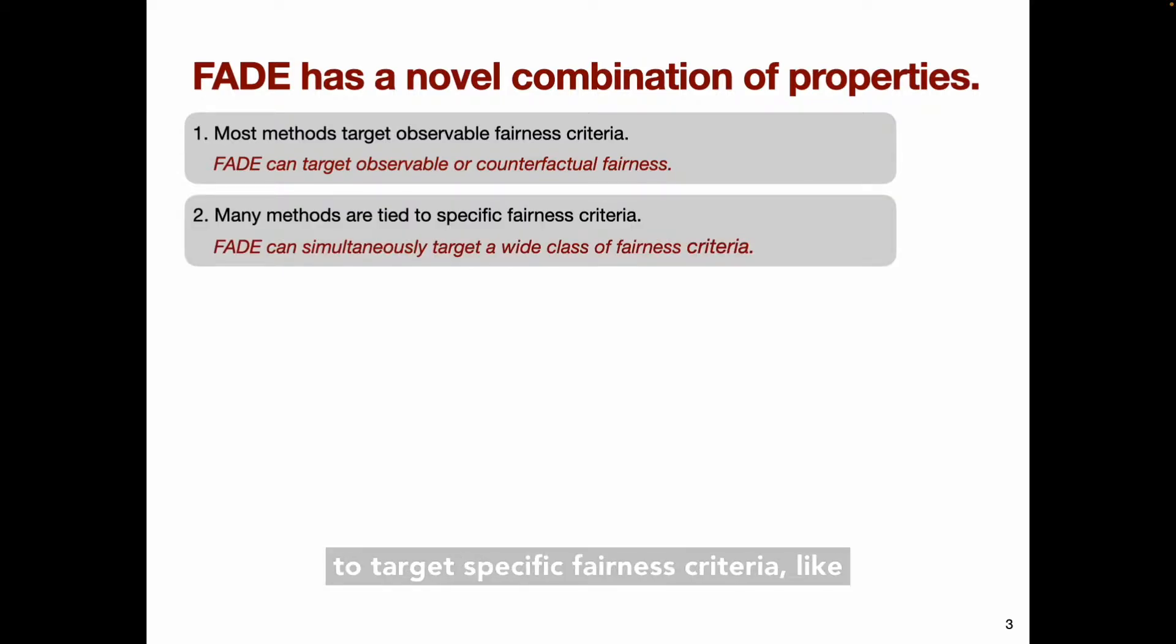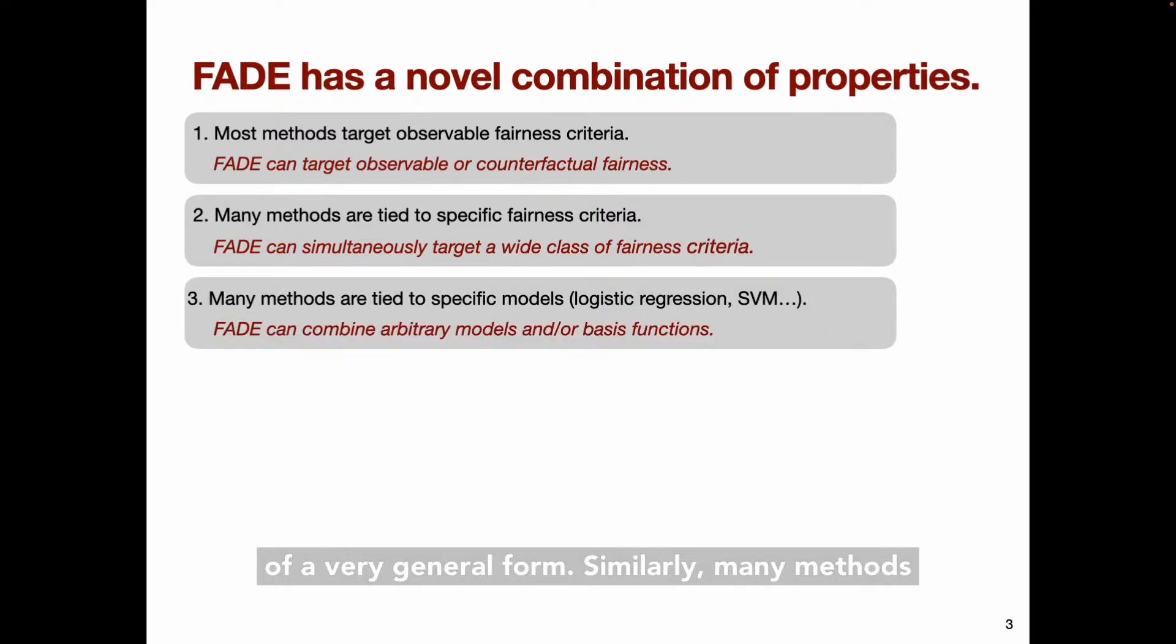Second, many methods are designed to target specific fairness criteria like demographic parity or equalized odds, and they don't necessarily generalize easily to other criteria. FADE can simultaneously target a large number of fairness criteria of a very general form. Similarly, many methods are designed for specific model classes like logistic regression or SVMs. FADE is an ensemble learning method, so it can combine arbitrary models or basis functions.